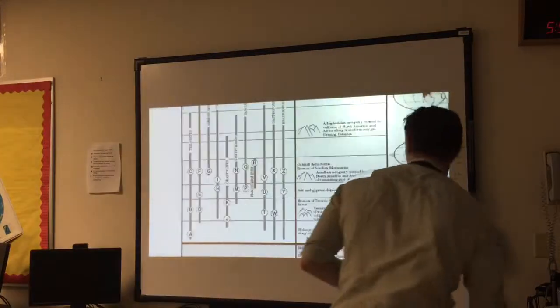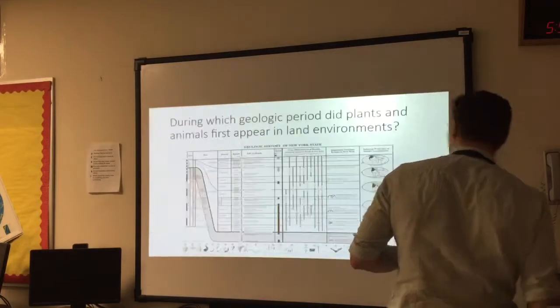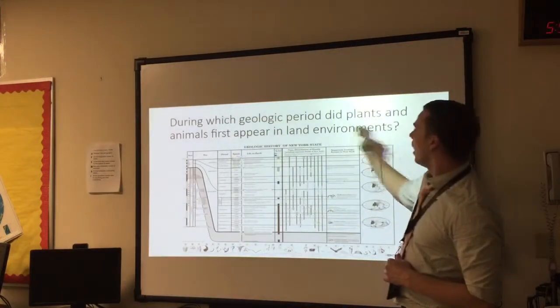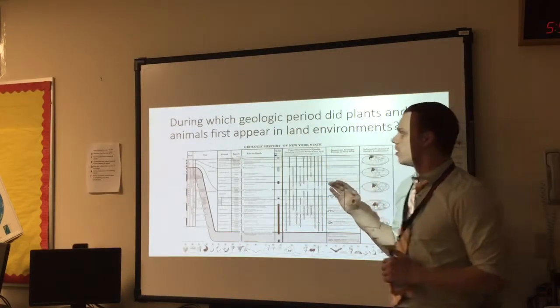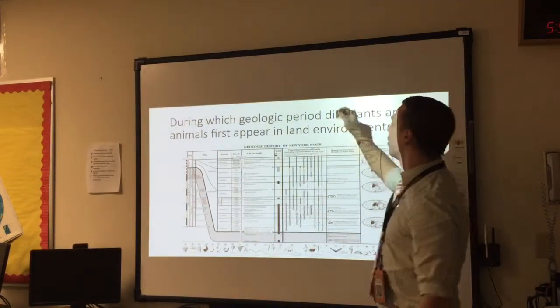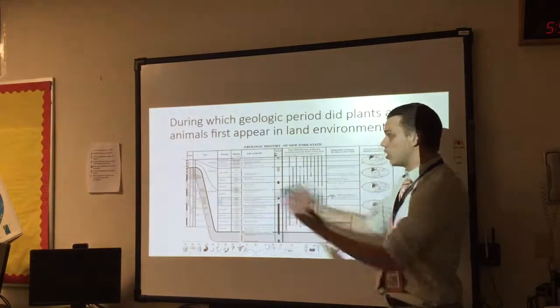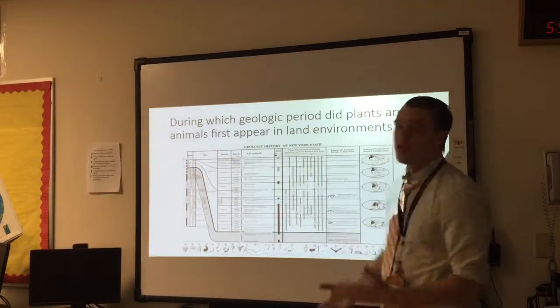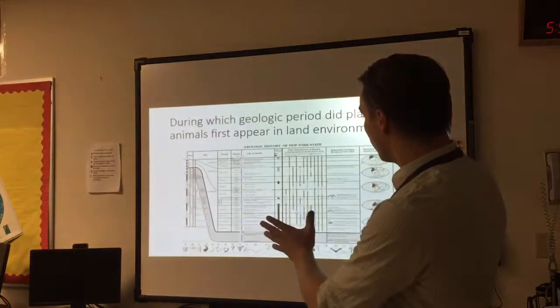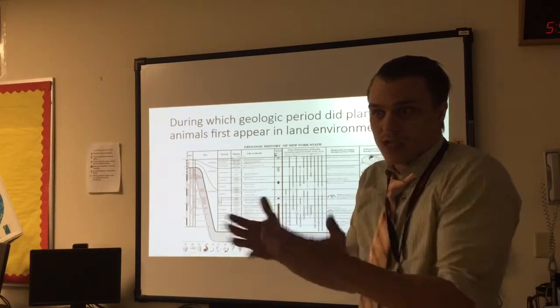They'll ask you a question like this: during which geologic period do plants and animals first appear on land or in land environments? What you're going to do is you're just going to search this entire page for plants and animals first appear in land environments. Just look for it, take your time, find it. When I took the Earth Science Regents exam, they asked a very similar question. I don't remember what it was, but I remember it was on this page and it took me seven minutes to find it.